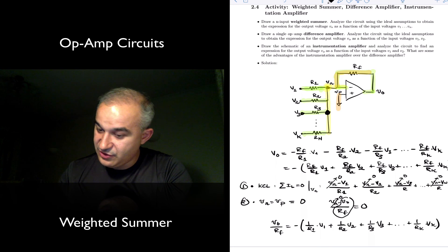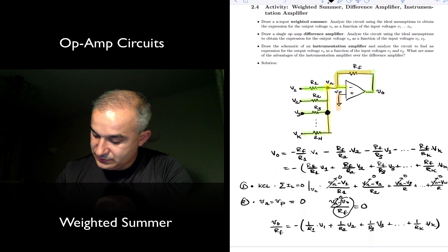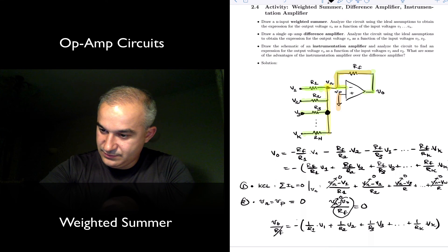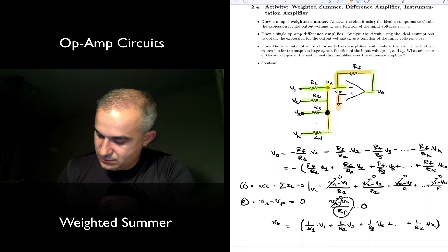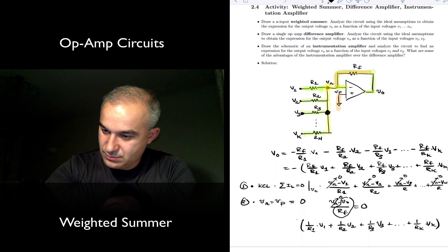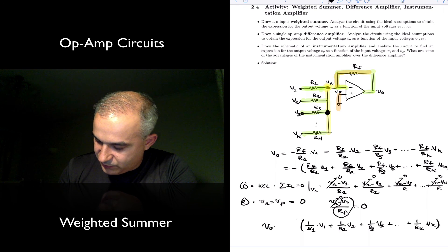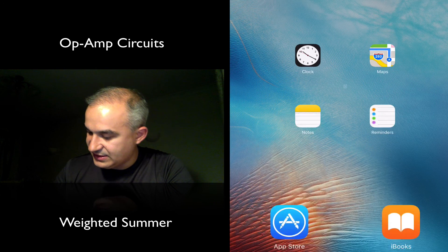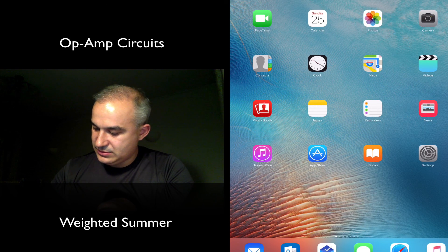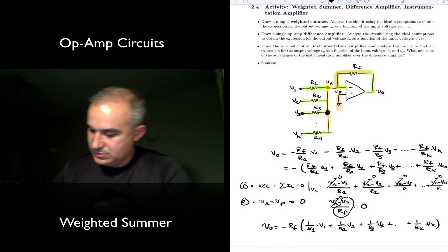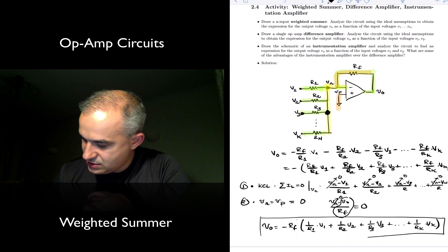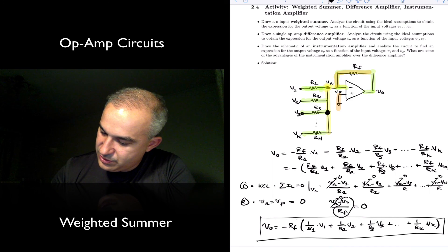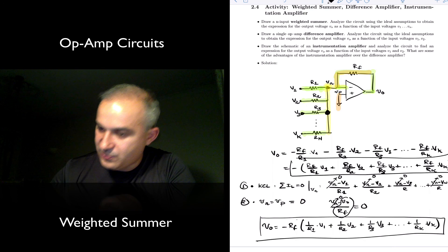Or if you multiply this two, cancel here you have RF. V output is equal to minus RF times this and you get the same expression as before. So we can either express it like this or express it like this, the output voltage.